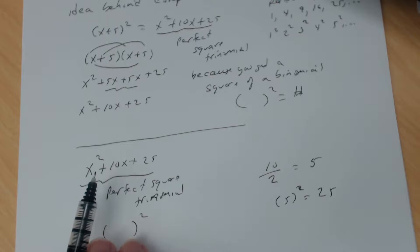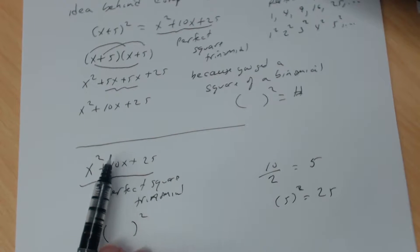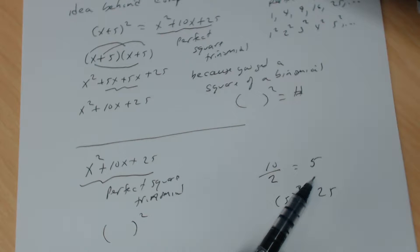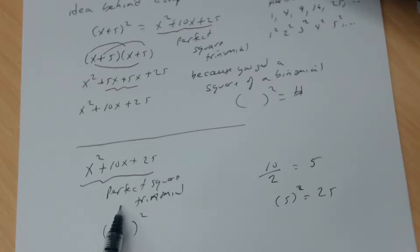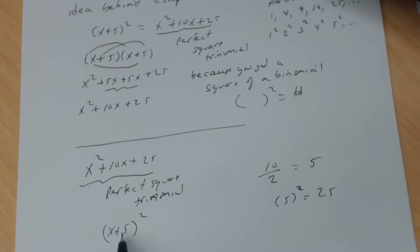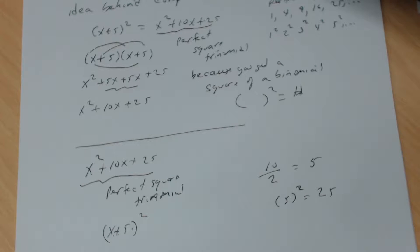To complete the square on the variable terms: first make sure the coefficient of x² is 1. Then take the coefficient of x — which is positive 10 — divide by 2 to get 5, then square it to get 25. That's what you add. If you do this correctly, the trinomial becomes a perfect square trinomial and you can factor it as (x+5)². When you FOIL that, x times x is x², 5 times 5 is 25, and the outer and inner give 10x.